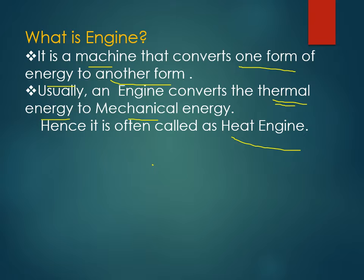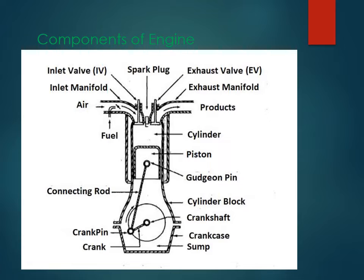These are the components of an engine. The inlet valve is the component through which the fuel and air enter inside the engine. There is also an exhaust valve. The inlet valve is the controlling agent of the inlet manifold — the inlet path is controlled by the inlet valve — and the exhaust valve controls the exhaust manifold. The inlet path is the entry of air and fuel, and through the exhaust valve the combustion products are removed.